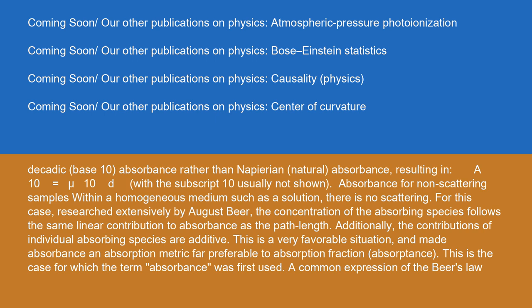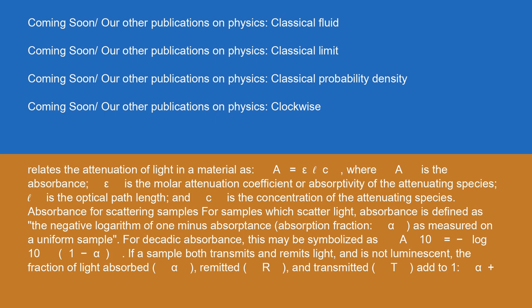For non-scattering samples within a homogeneous medium, such as a solution, there is no scattering. For this case, researched extensively by August Beer, the concentration of the absorbing species follows the same linear contribution to absorbance as the path length. Additionally, the contributions of individual absorbing species are additive. This made absorbance an absorption metric far preferable to absorption fraction (absorptance). A common expression of Beer's Law relates the attenuation of light in a material as A = ε × C × l, where A is the absorbance, ε is the molar attenuation coefficient or absorptivity, l is the optical path length, and C is the concentration of the attenuating species.